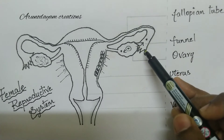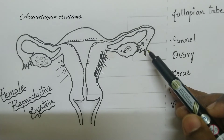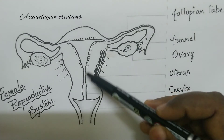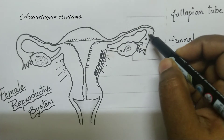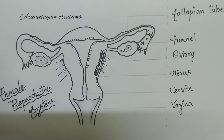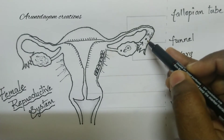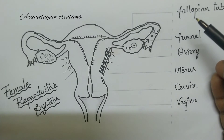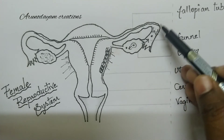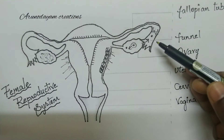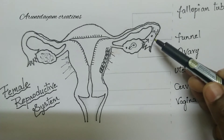The ovum will wait for only 24 hours for fertilization. If sperms enter into the female reproductive system in the form of semen, many sperms enter, but only one sperm will fertilize this ovum. Hundreds or thousands of sperms enter into the female reproductive system, but only one sperm can fuse with the ovum.